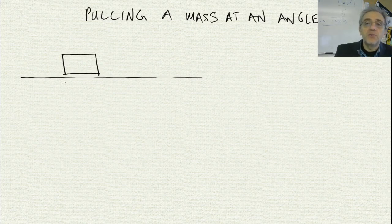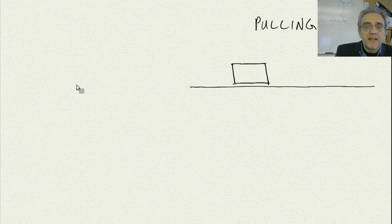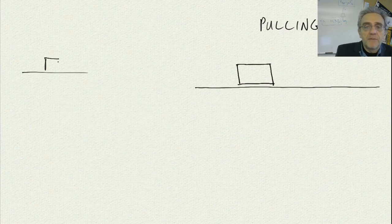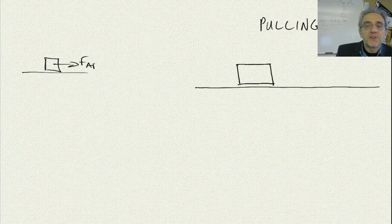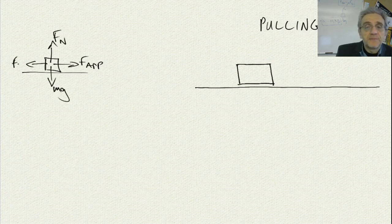Today we're going to do a problem called pulling a mass at an angle. So far, when we have done pulling a mass, we have pulled it with an applied force which only acts horizontally. In those cases, we have mg going down, normal force going up, and sometimes we've even had friction. But that's as complicated as it gets.